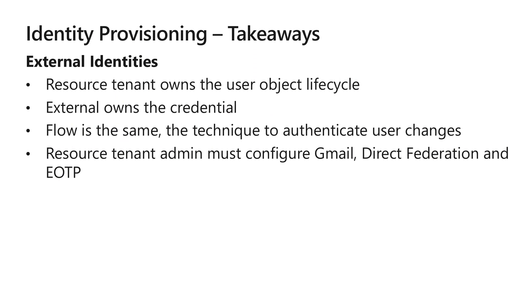Here are some key takeaways for external identity provisioning. The resource tenant owns the external user object lifecycle — they can add the user to groups, change attributes, or anything else you can do with a user object. The external user owns the credential. All four techniques allow you to collaborate with pretty much anybody without creating local accounts for external users. The flow is exactly the same across all the scenarios; the technique to authenticate the external user is the only thing that changes. Tenant-to-tenant invitation works by default, but all the other three methods need to be configured by the administrator ahead of time.